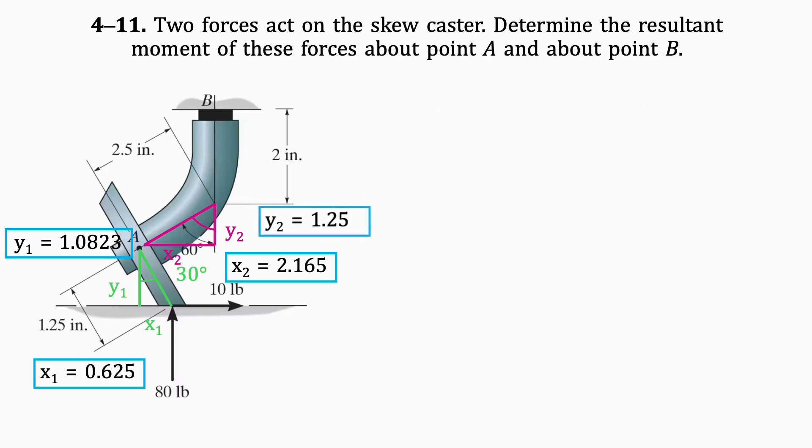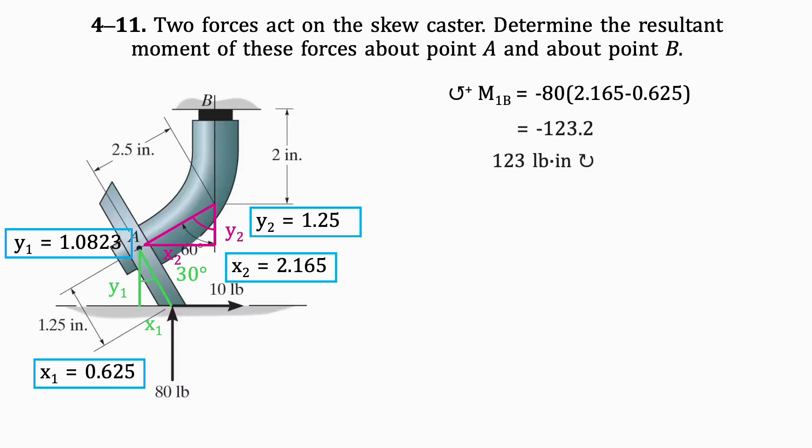Now we have all the necessary information to find the moment about point B. We'll find the moment of the 80-pound force about point B first. This moment is the force times its distance from B, which we can find by subtracting x1 from x2. The resulting moment is 123 pound-inches in the clockwise direction.